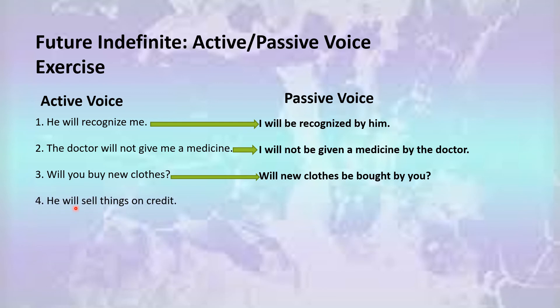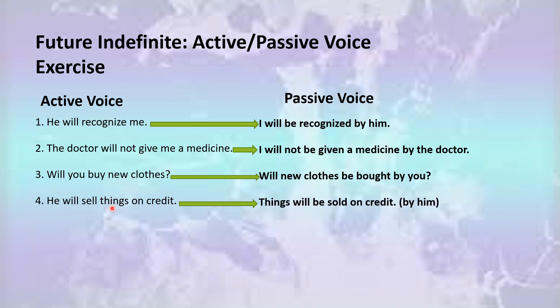Number four: 'He will sell things on credit.' Here 'things' is the object, so you will take it out and place it at the start in the position of the subject. Your sentence would look like this: 'Things will be sold on credit by him.' You can either include 'by him' or omit it or write it in brackets.